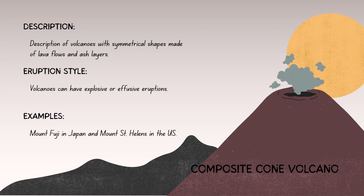The composite cone volcano, also known as a stratovolcano, is a large and typically symmetrical volcano characterized by both explosive and effusive eruptions. Effusive refers to a type of volcanic eruption with a relatively gentle and steady flow of lava onto the earth's surface. In effusive eruptions, the magma is typically low in viscosity — less thick — and flows more easily, creating lava flows and lava plateaus.